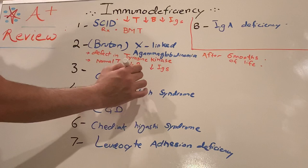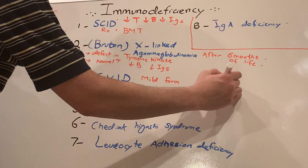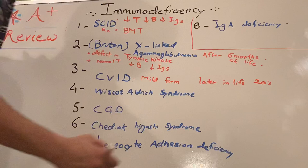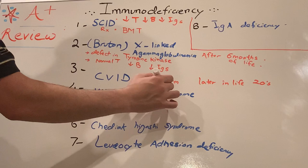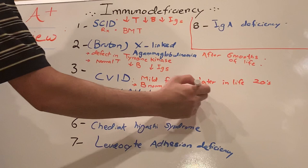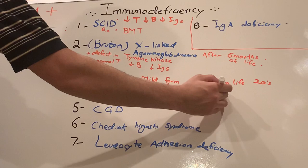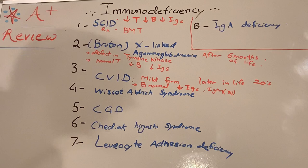If you talk about Common Variable, it's a mild form of X-linked agammaglobulinemia. So mild form happens later in life, like in the 20s. But what's happening here with the B cells? B cells will be normal. Ig - B cells are normal, but decreased in all immunoglobulins except normal IgM. Normal IgM because this is the first immunoglobulin which comes first. Basically, you can just remember defective B cell differentiation.